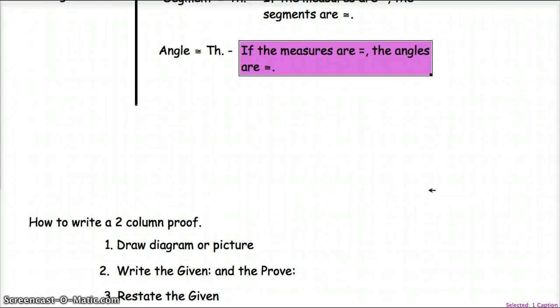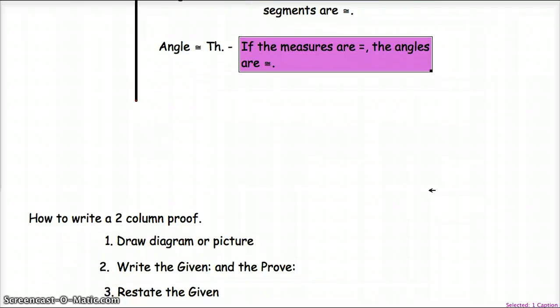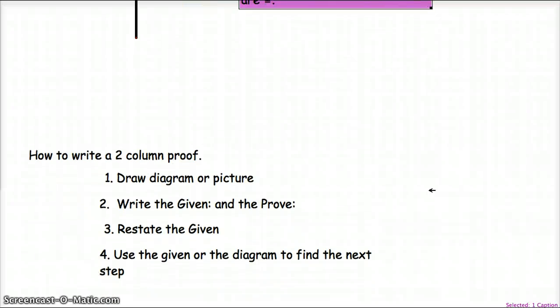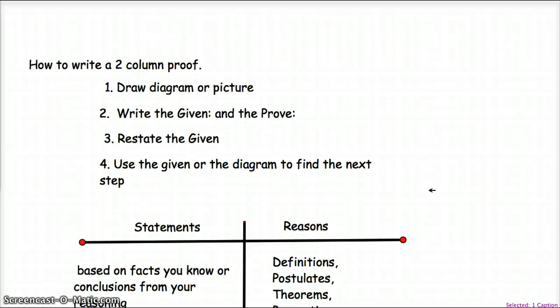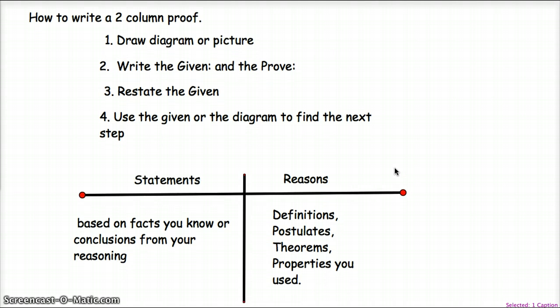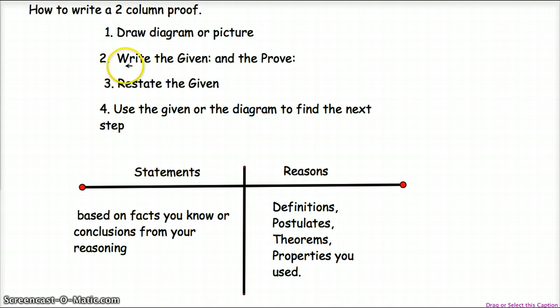All right, so we're going to do a two-column proof now. There's lots of different types of proofs. In Algebra 2, pre-AP Algebra 2, you'll probably do some paragraph-type proofs, but the most common, the ones that we're going to use, is the two-column proof. This is the way I was taught when I grew up, so it's probably the easiest way for me to remember how to do it. Basically, you draw your diagram or picture. So whenever it's talking about something like segments being congruent, the first thing you want to do is draw your picture or your diagram that it's giving you, so that you can write on it, so that you can manipulate it as you need to. Then you're going to write the given and the proof.